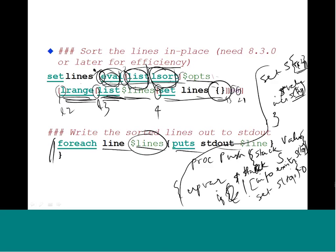Once you understand this particular program you will be okay to handle any typical Tcl program. Looking at the nesting levels gives a good indication of how the sorting program works. The levels are marked 1, 2, 3 — lsort is level 3, and then we have lrange, list, and set lines. It is all evaluated from inside out, one level at a time, and the range is 0 to 0.